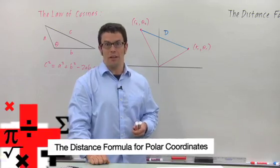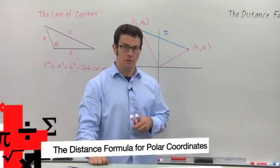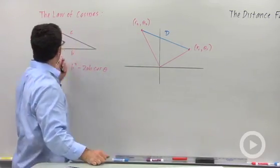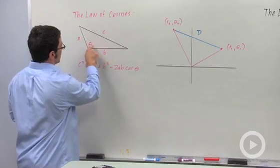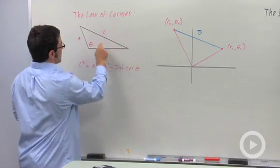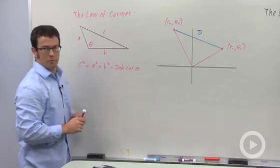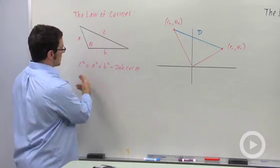I want to derive the distance formula in polar coordinates. To do this, I'm going to need to recall the law of cosines. If you have a triangle that's not necessarily a right triangle, and you know two sides and the angle between them, you can find the third side using this formula.